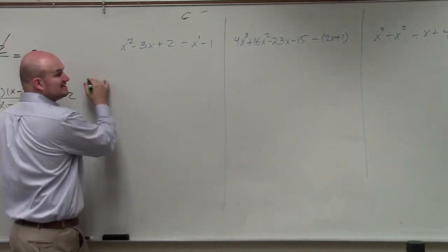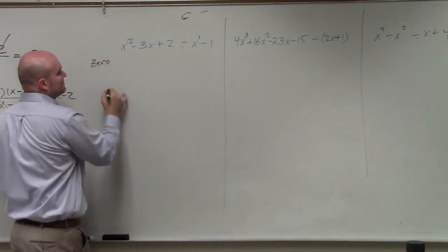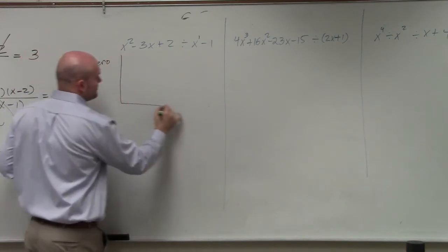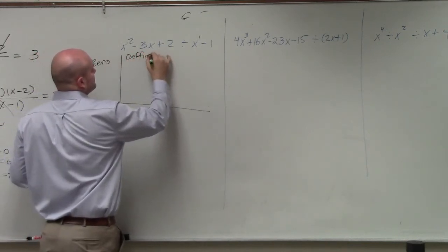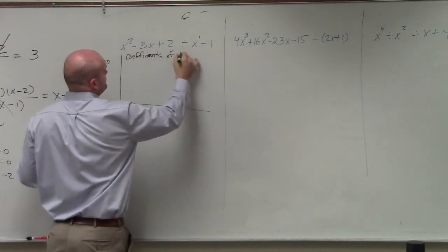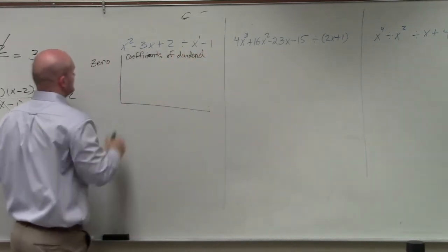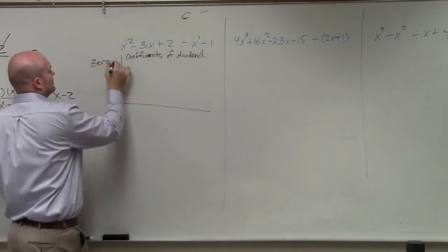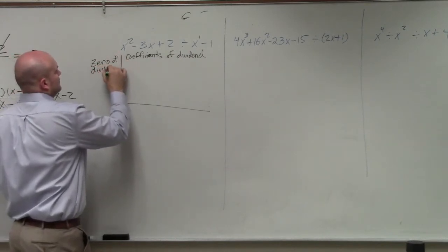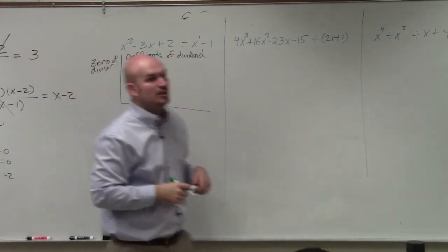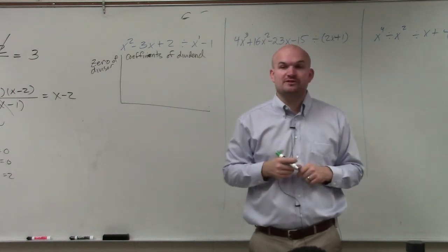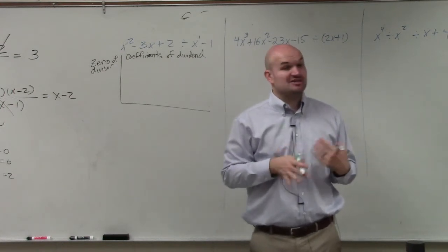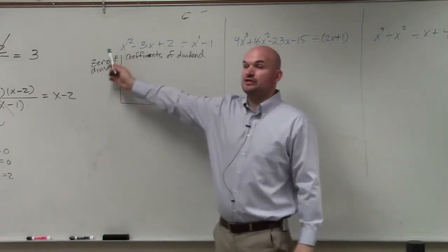When doing synthetic division, we need to set it up. And what we're going to do is we're going to divide by the zero. We're going to use the zero and then the coefficients. So we're going to use the zero of the divisor and the coefficients of our dividend. Now, just like long division, you have to make sure that you're in descending form.